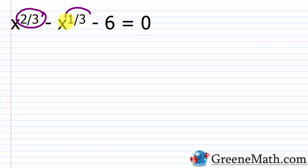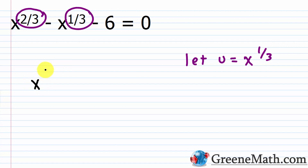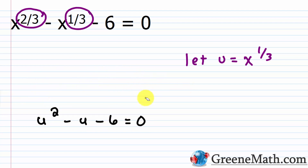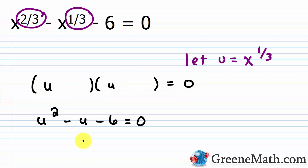Let u equal x to the power of 1/3. Rewriting using rules of exponents: (x^(1/3))² minus x^(1/3) minus 6 equals 0. After substitution, u² - u - 6 = 0. This one we can solve by factoring, which will be a bit quicker.